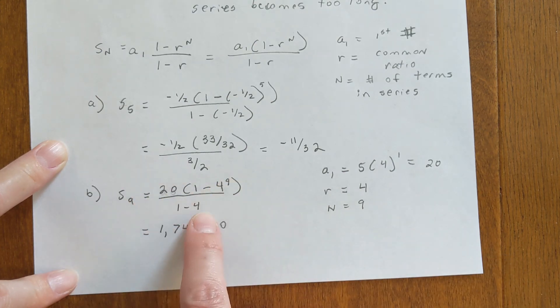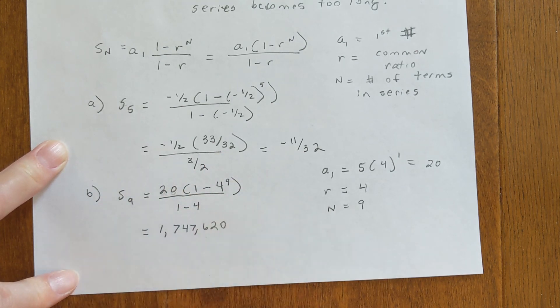So plug those numbers in and divide the numerator by the denominator. Remember, put parentheses around the top and another set around the bottom if you're entering it all in your calculator at once, or just find the top, then the bottom, then divide them.